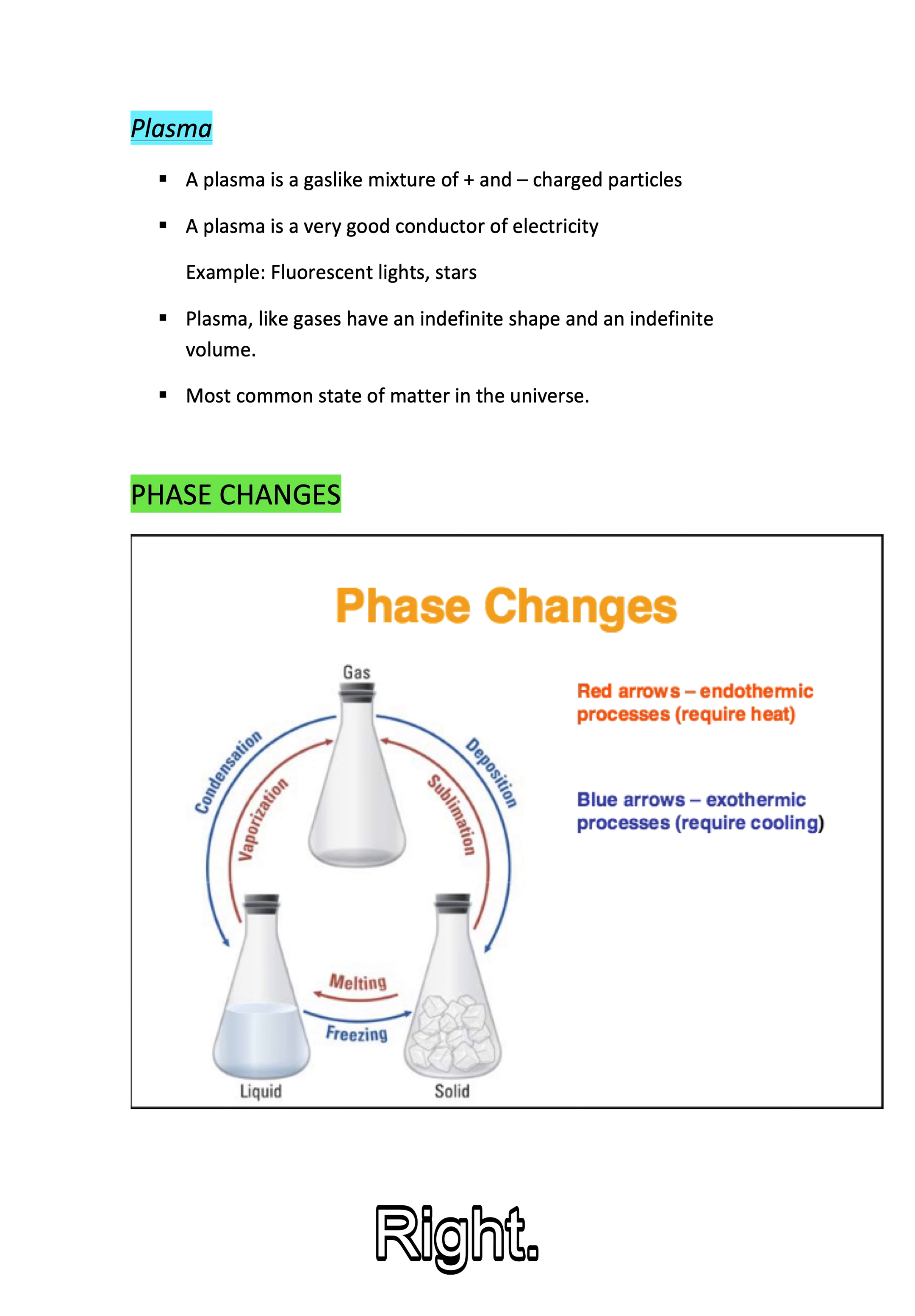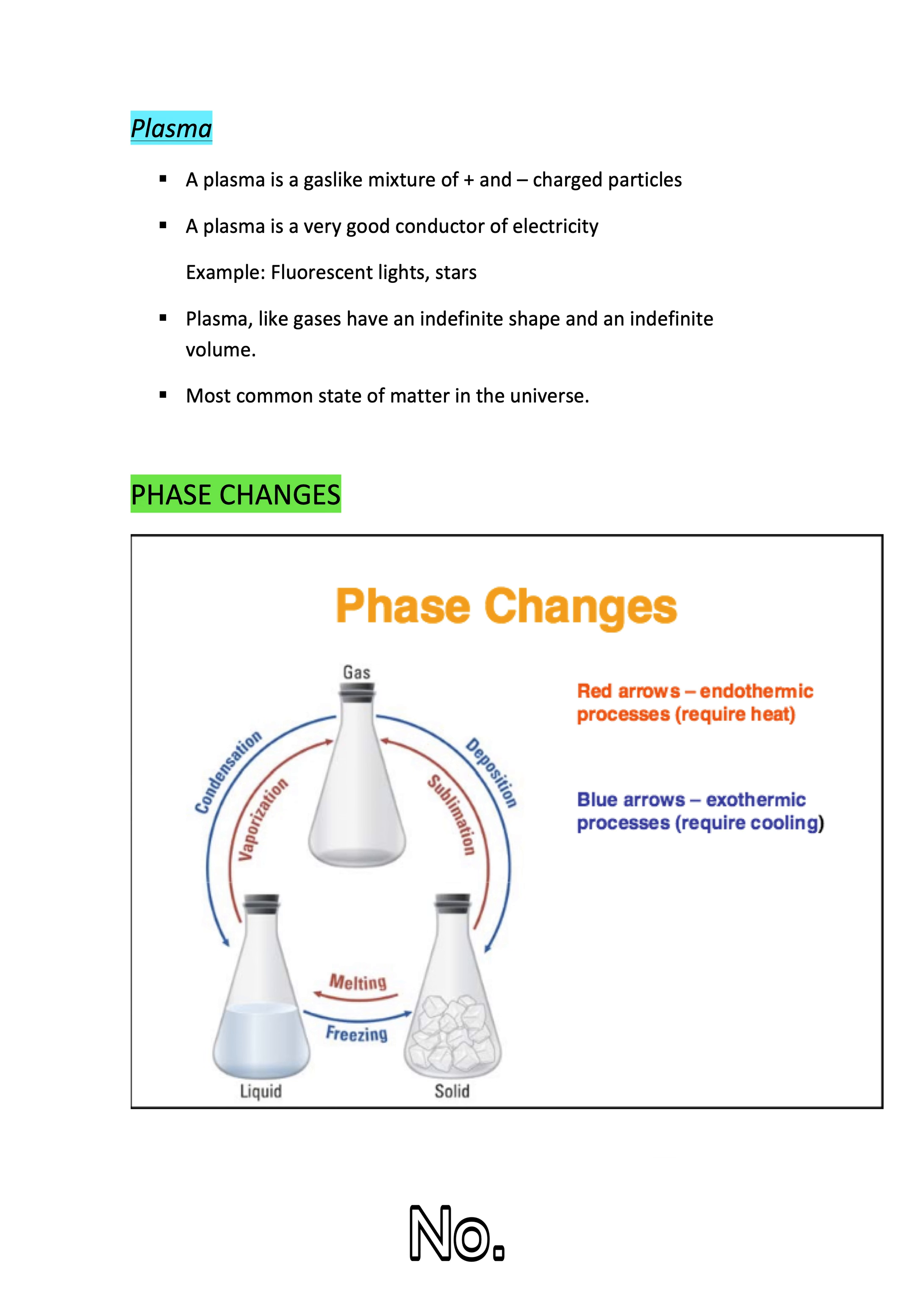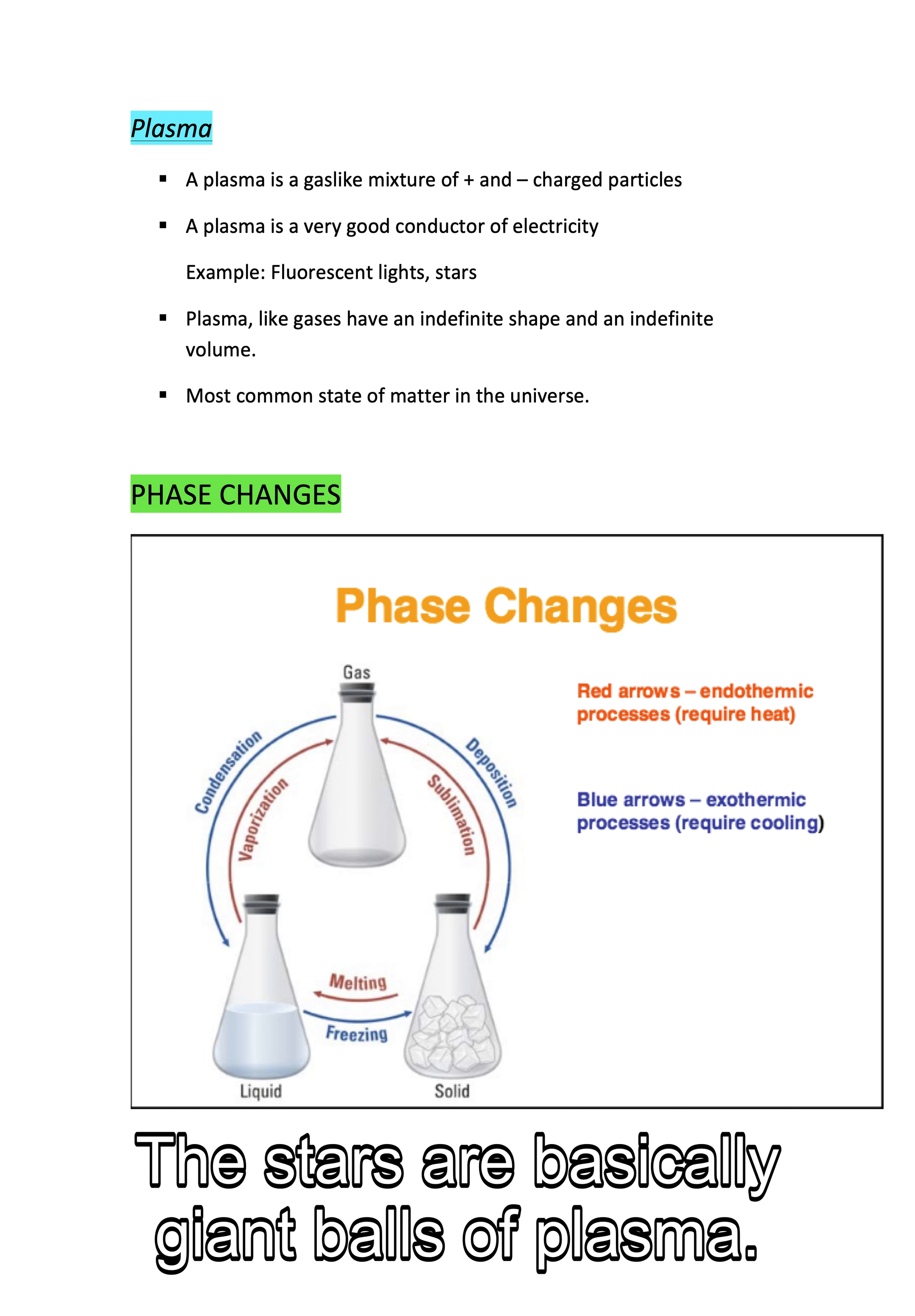Those electrons we talked about, the ones that determine how atoms bond to each other—those tiny dancers hard at work—in plasma, those electrons get so much energy that they break free from their atoms, creating a sea of electrically charged particles. So plasma isn't just some sci-fi concept. It's actually the most common state of matter in the universe.